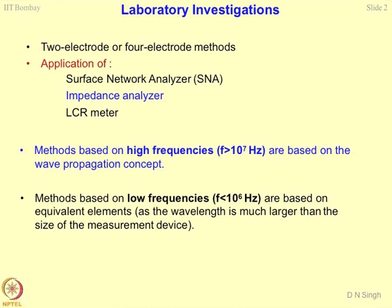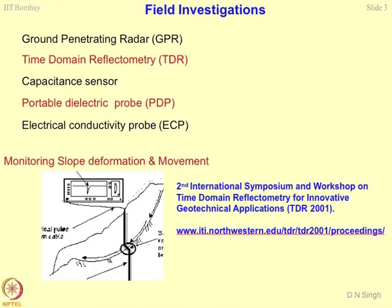The second class of methods is based on low frequencies where the frequency is less than 1 megahertz. These are based on equivalent elements or equivalent circuits because the wavelength does not come into the picture — the wavelength happens to be much larger than the size of the sample being studied. This is the basic difference between why you adopt a low frequency versus high frequency device for measuring electrical properties in the laboratory. Then comes the concept of field investigations.